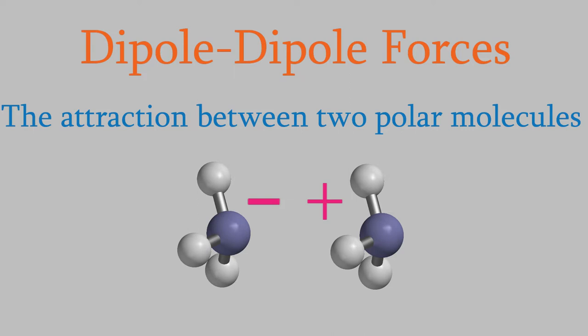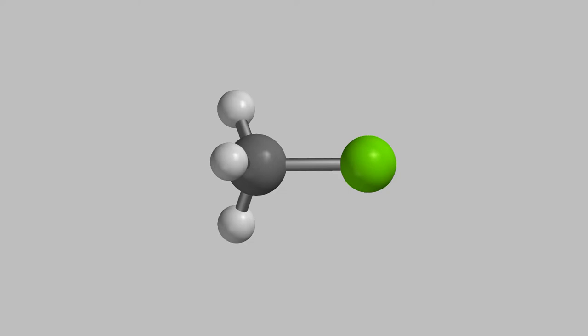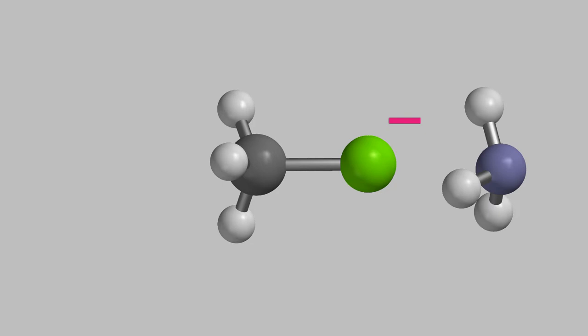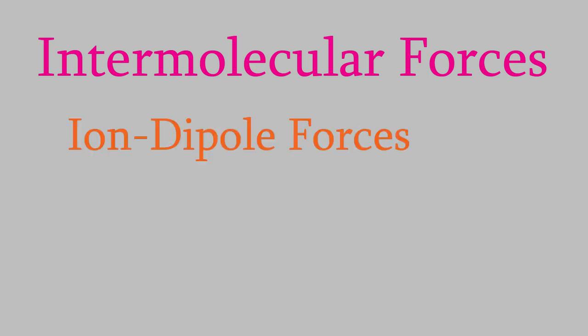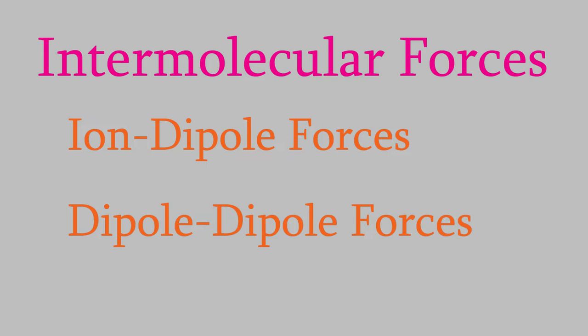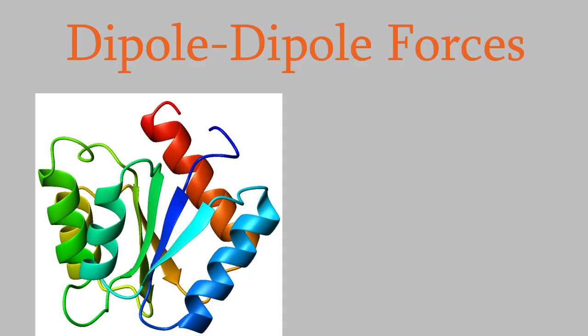Dipole-dipole forces can also occur between molecules of two different compounds. For example, here's a chloromethane molecule. It's asymmetric, so it's a dipole. The negatively charged side is where the chlorine is, so this side of the molecule is attracted to the positively charged end of an ammonia molecule. The other end of chloromethane will be attracted to the negative side of an ammonia molecule. Ion-dipole forces are always stronger than dipole-dipole forces, but even though the dipole-dipole force is weaker, it's still strong enough to be very important for the properties of many substances, including biologically important ones like proteins and DNA.